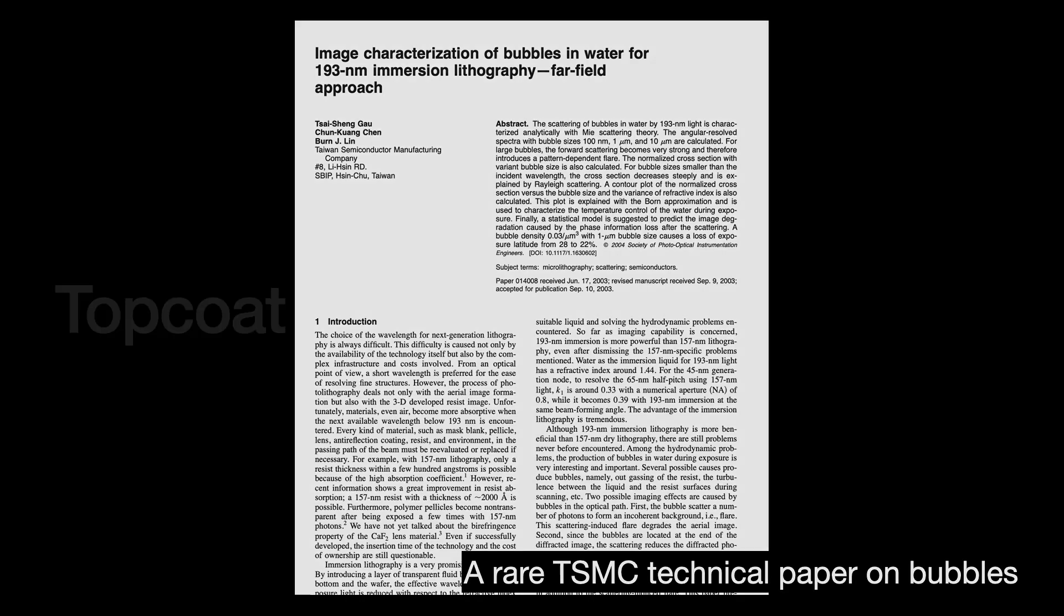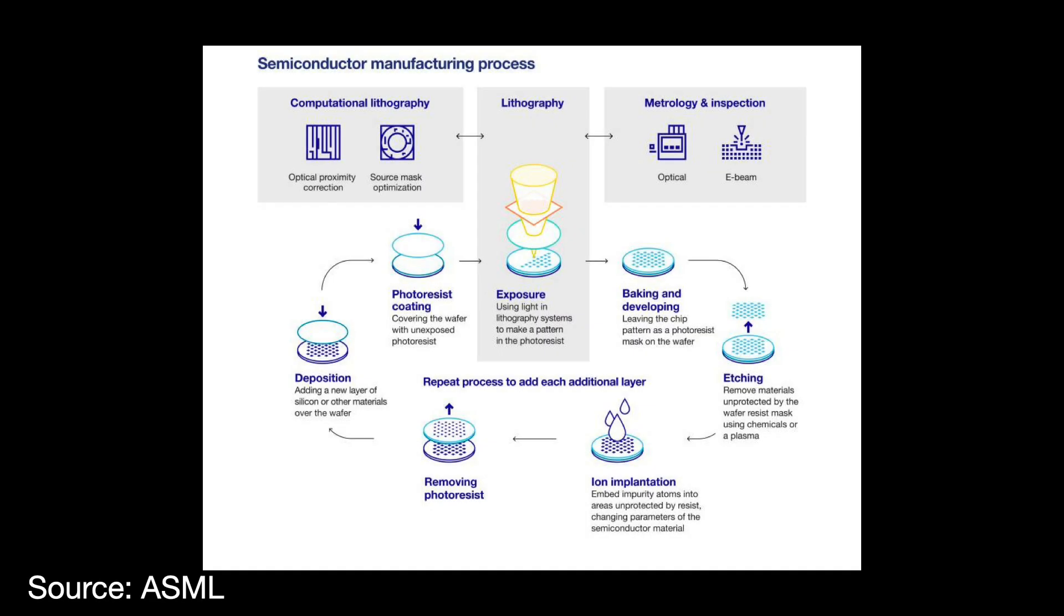Putting water directly on the wafer creates new contamination issues. Sematech particularly focused on water contamination and leaching issues relating to the resist. Part of the lithography process involves the application of a photoresist chemical that reacts to the DUV light exposure. Water can carry contaminants from the wafer to the optics lens, or vice versa. And if water somehow leaches away enough of the resist's chemical components, the resist might lose its ability to absorb DUV light.